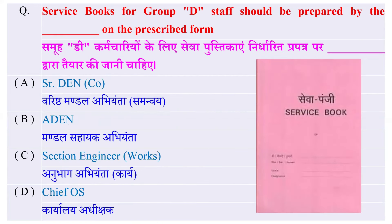Service book for Group D staff should be prepared on the prescribed form — Group D कर्मचारियों (जो अब Group C में समाहित हो चुके हैं) की सेवा पुस्तकाएं निर्धारित प्रपत्र पर किसके द्वारा तैयार की जानी चाहिए? Level 1 grade pay (1800 grade pay) वालों की सेवा पंजियों को WORKS के संबंध में senior section engineer WORKS के द्वारा बनाया जाता है।